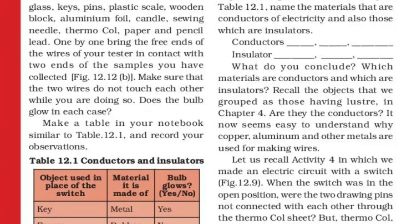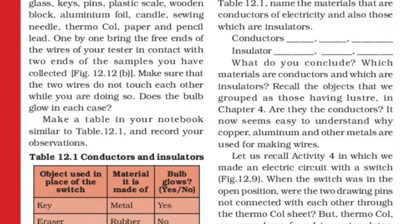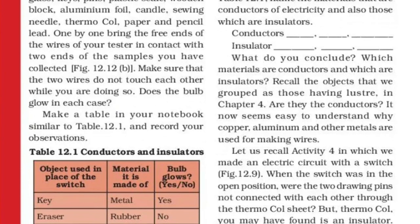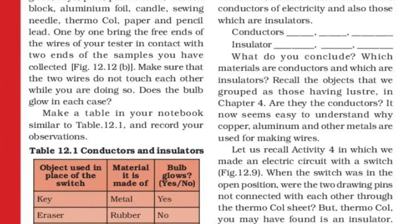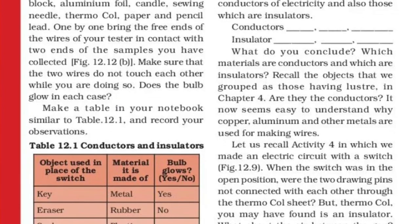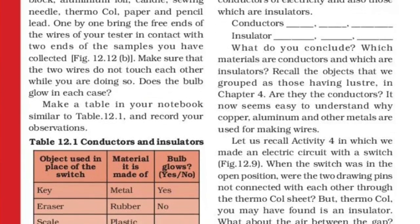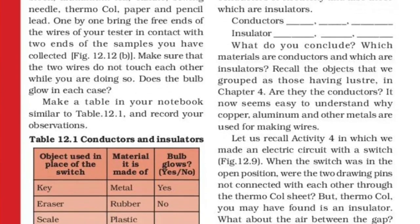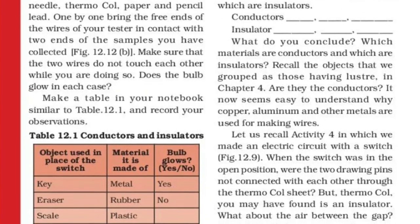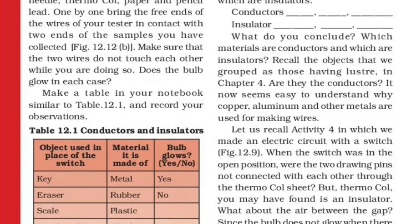Recall the objects that we grouped as those having luster — that was in Chapter 4. Are they the conductors? It now seems easy to understand why copper, aluminium, and other metals are used for making wires.